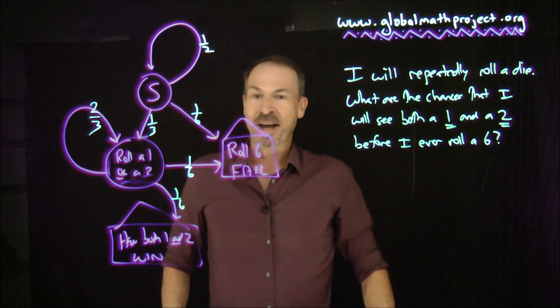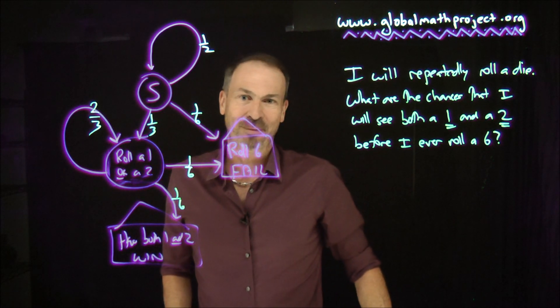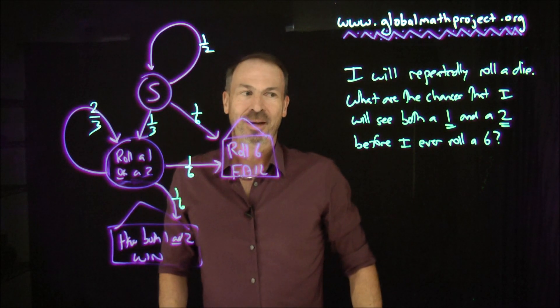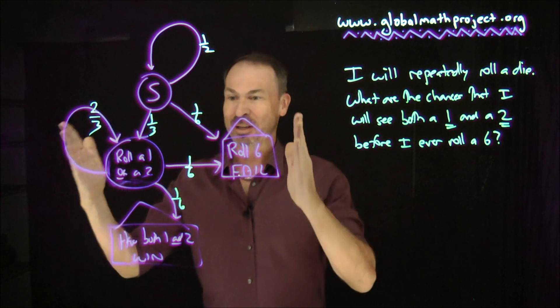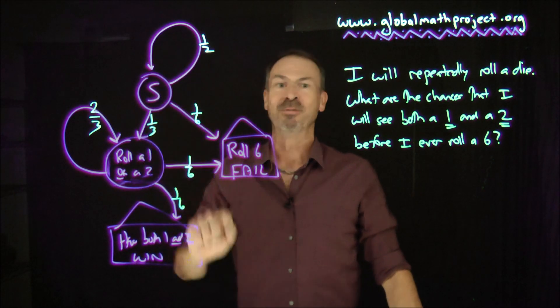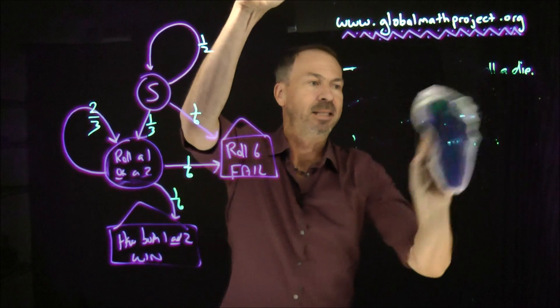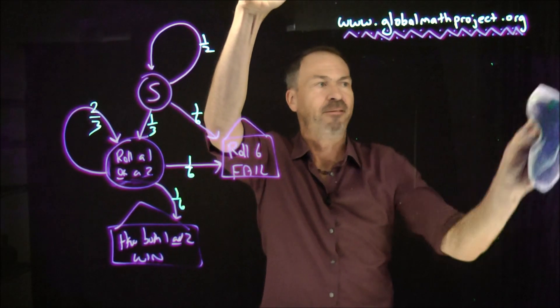So we're being asked, what are the chances that you end up in the win house compared to ending up in the fail house when you go through this system? Now what we have to do is, can I philosophically simplify this system in my mind? And the answer is yes, because I see a loop from start to itself.